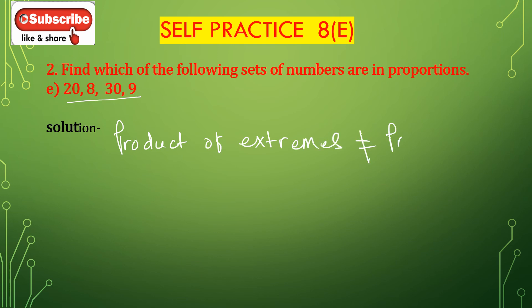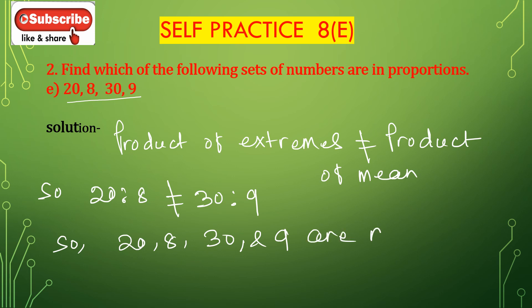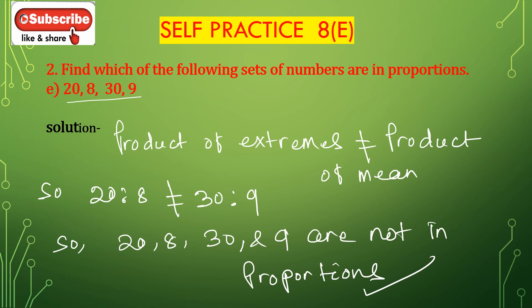Product of extremes is not equal to product of means. So 20 is to 8 is not equal to 30 is to 9. Therefore these numbers 20, 8, 30, and 9 are not in proportion.